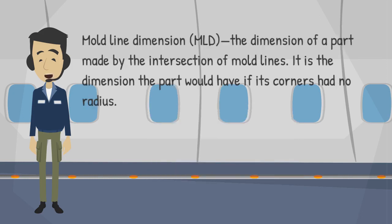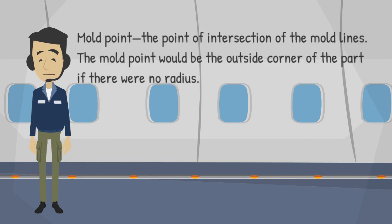Mold line dimension (MLD): the dimension of a part made by the intersection of mold lines. It is the dimension the part would have if its corners had no radius. Mold point: the point of intersection of the mold lines. The mold point would be the outside corner of the part if there were no radius.